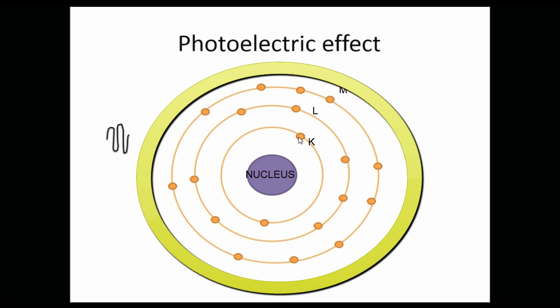As you know that in the K shell we have two electrons in the outer orbit of the shell, and in case of M shell, it consists of eight electrons and so on.